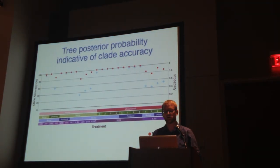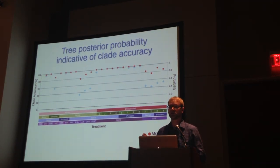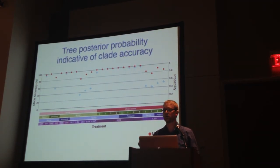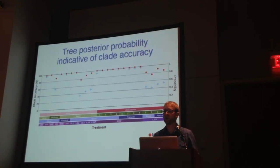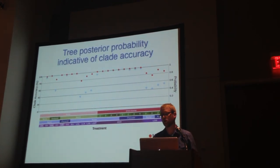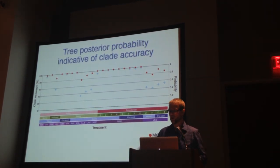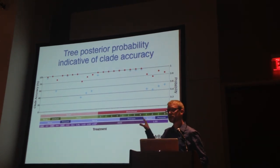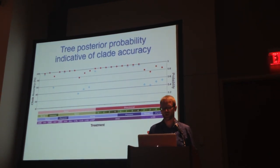I also want to show another result: the MrBayes data plotted with the mean posterior probability for those 10 trees. The tree posterior probability is very highly indicative of clade accuracy. If we had a mean posterior probability of 0.95 or greater, our mean clade accuracy value is very, very high — generally 100%. With posterior probabilities lower than that, we wouldn't necessarily be sure we were getting the correct tree. You can't generalize anything from this because this is experimental evolution, not a simulation, but that's an interesting result.